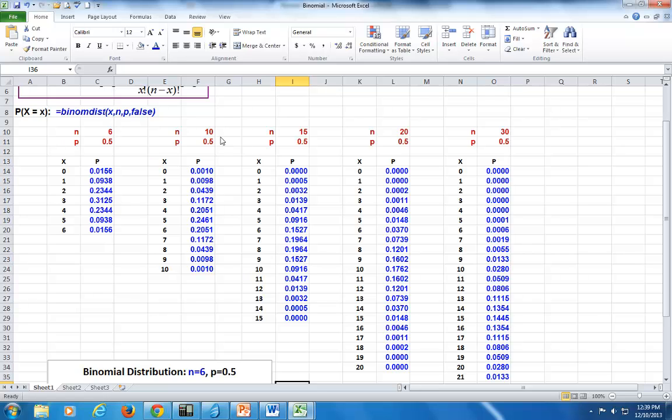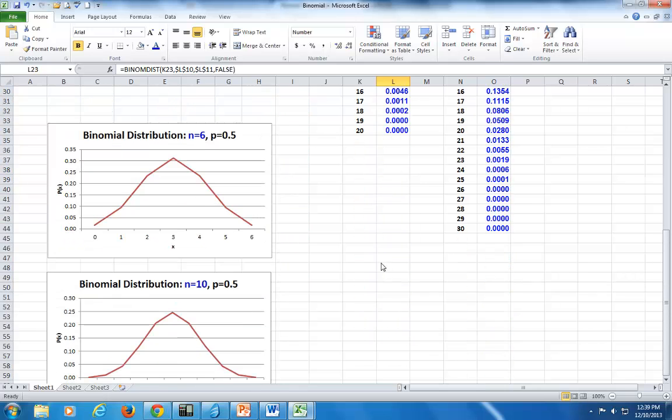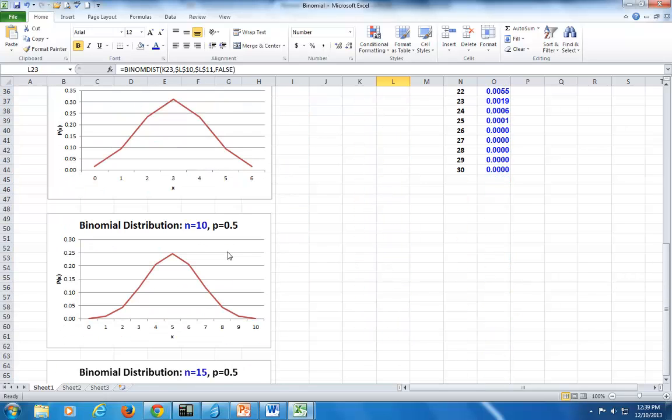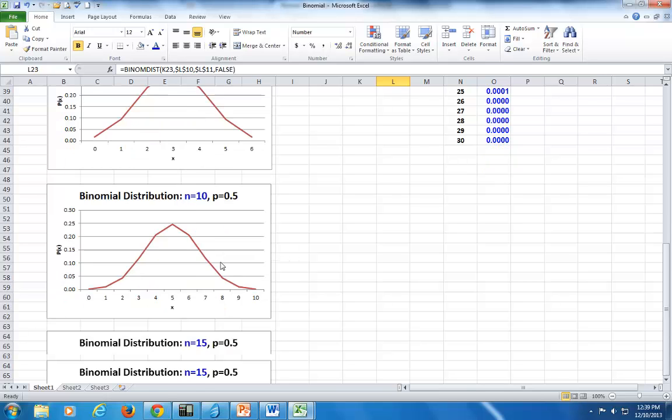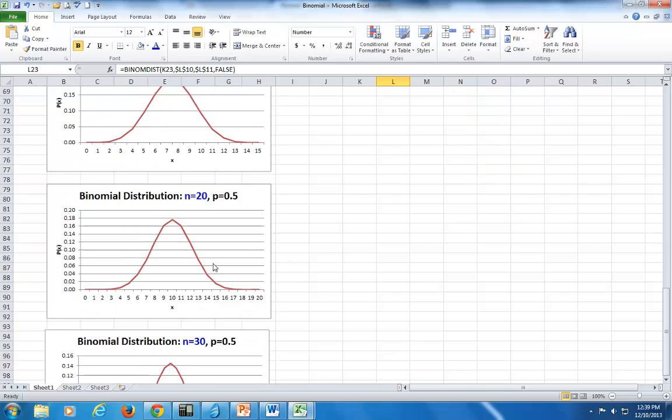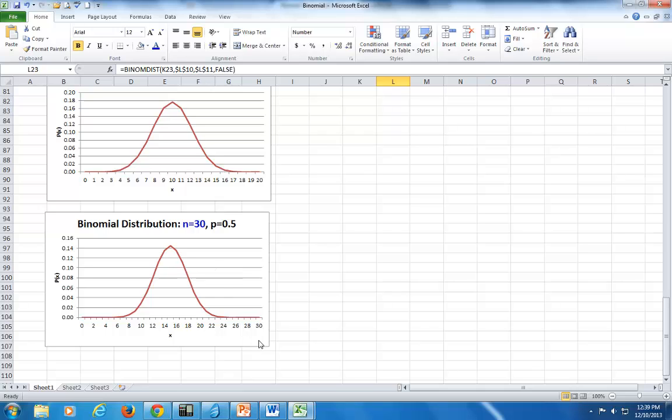In the same vein, I did it for n of 10, 15, 20, and 30. And these are the results of the probabilities that have been calculated. And then, equally, I plotted them. So, you can see the plotting here for n of 6, n of 10. Just notice how increasingly the graph becomes smoother. n of 15, of 20, and of 30. By 30, you have a beautiful bell-shaped curve.